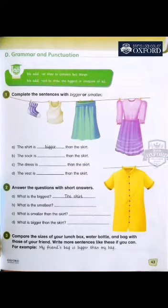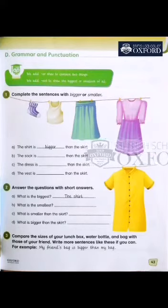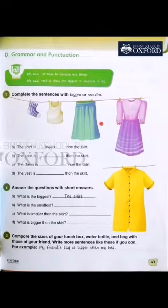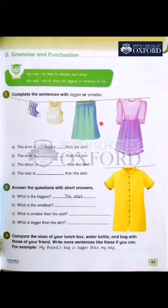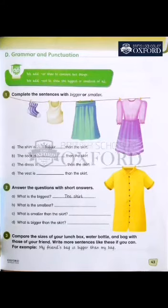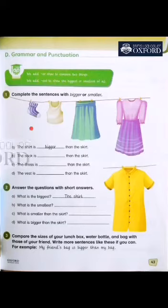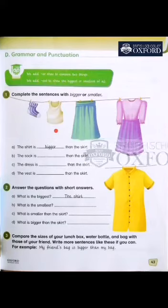Now let's solve the exercise. In front of you, there are some clothes: socks, vest, skirt, and dress. These things are different sizes. What are the smallest things? Socks. Then vest, then skirt.